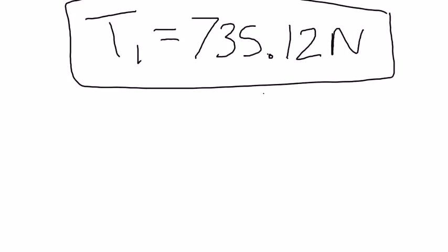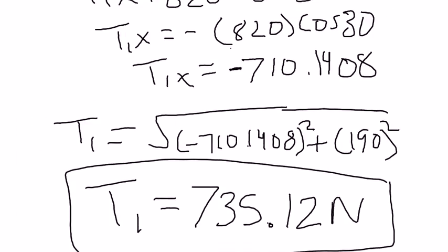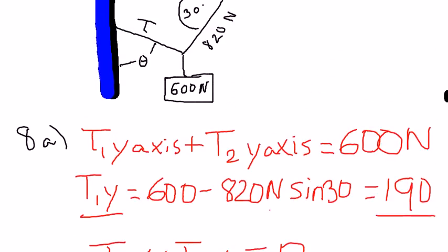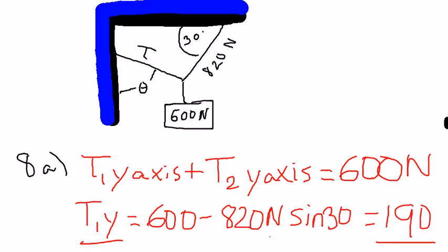And now number 8b. 8b says what is the angle theta that the left hand cable makes with respect to the wall, so we're going to find what the angle is here.